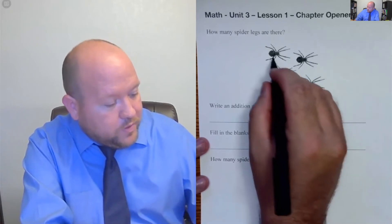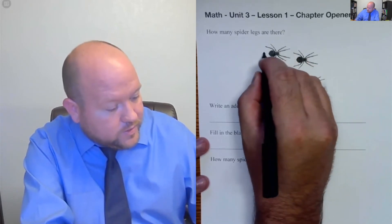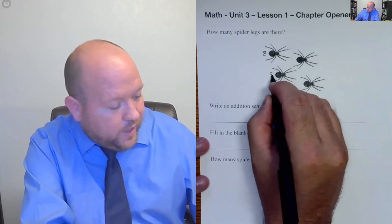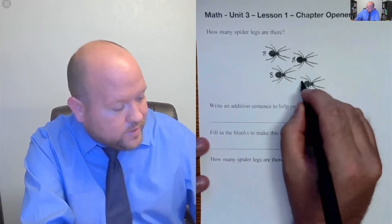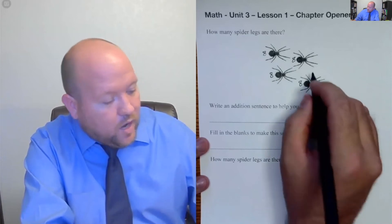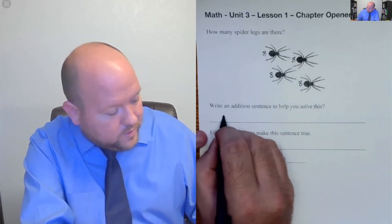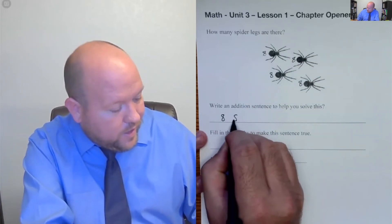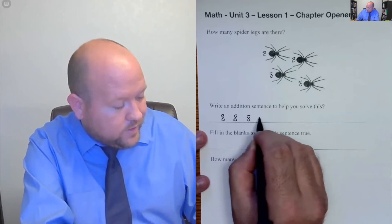So what we would do is eight. This is an eight. This is an eight. And this is an eight. So we have four eights. Eight, eight, eight, eight.